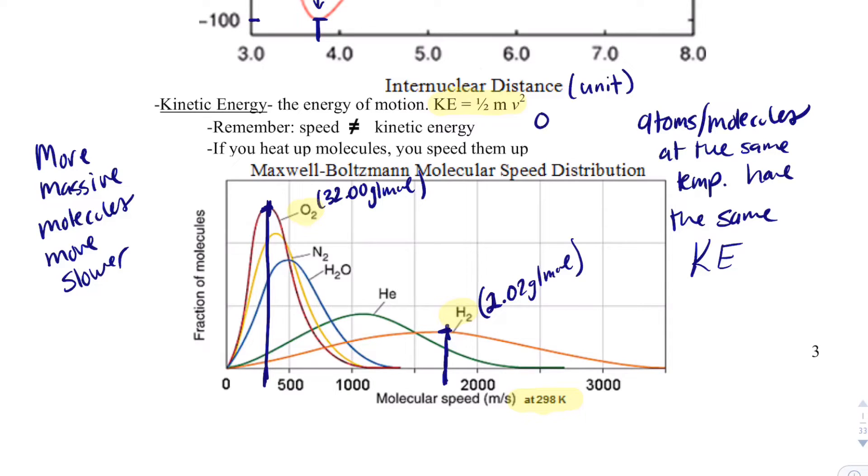For oxygen, the mass is really high but the velocity is really low. For hydrogen, it moves really fast but it's not very massive. When you multiply them together with this formula, square the velocity and one-half the mass, you will get the same kinetic energy for these gases.